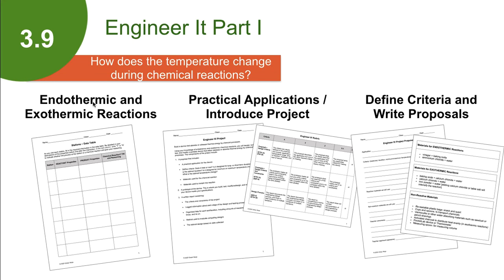We define exothermic and endothermic reactions and then brainstorm some real-world applications of them. We then present the engineer-it design project instruction sheets. Students will need to build a device that will help them in their everyday lives that either absorbs or releases thermal energy using a chemical reaction. After a brief discussion of the project and the timeline, we look over the rubric, the materials list handout, and a written worksheet guides students through brainstorming, defining criteria, and submitting a project proposal by the end of class.